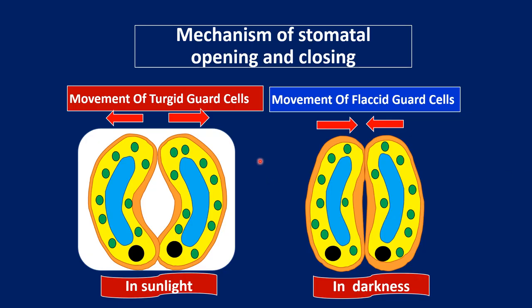When sunlight shines on a pair of guard cells, the guard cells move apart and open the stoma, whereas in darkness the guard cells come together and close the stoma. This is caused by a series of events that take place in the guard cells when there is more light or less light. Let's look at the mechanism of stomatal opening first.